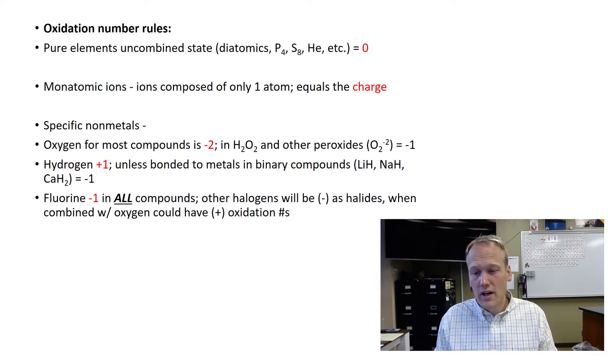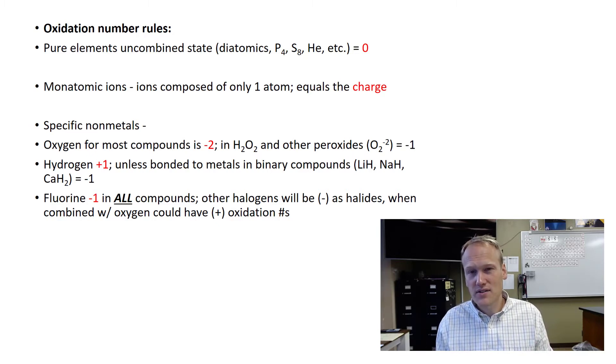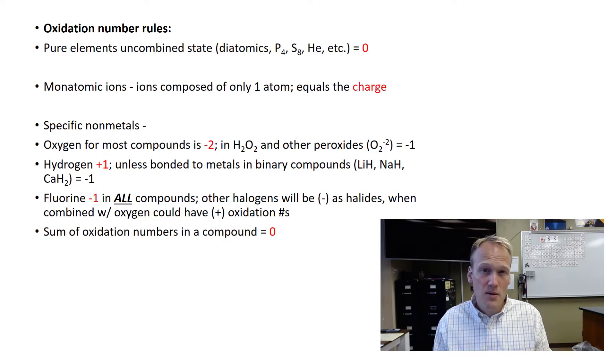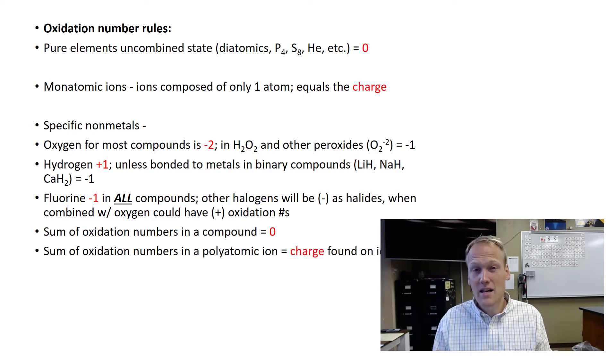Fluorine is a negative one in all compounds. Other halogens will most likely be negative, but if they're combined with oxygen, let's say in a polyatomic, they would have a positive charge. Two more rules here. The sum of the oxidation numbers within the compound should equal zero. And the sum of the oxidation numbers within a polyatomic should equal the charge of that ion.